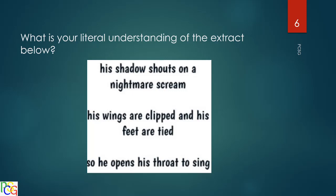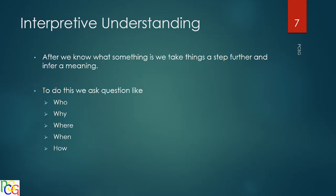After literal understanding comes interpretive understanding. This is where we take things a step further and infer meaning. To do this we ask questions like who, why, where, when, and how. With the small extract before, there isn't quite enough information for all five questions, though we can ask 'how' — because we know it's a bird whose wings were clipped and feet were tied.